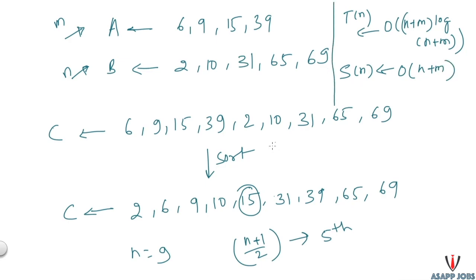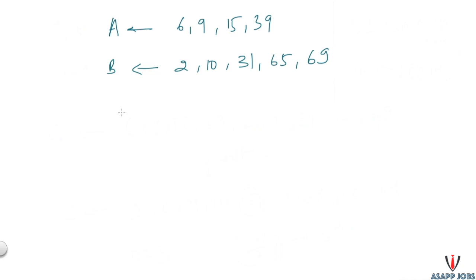To optimize our solution, we need to think beyond O(n log n) time. The key insight is: do we actually need to sort? We would need sorting if both arrays were unsorted, but since arrays A and B are already sorted, we just need to merge them so the final sequence is in sorted order — similar to what we do in merge sort.